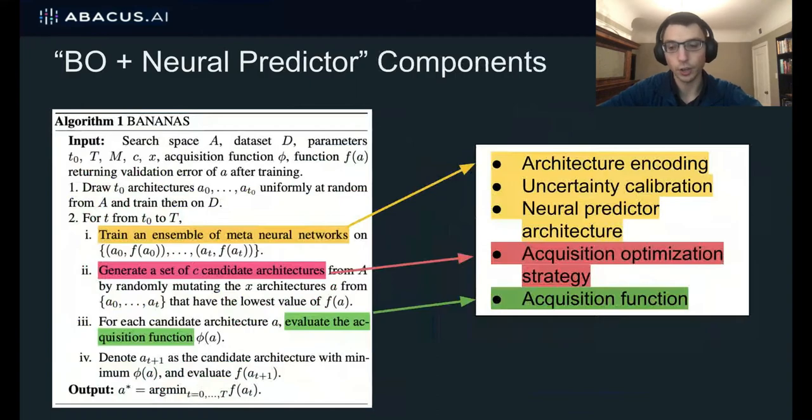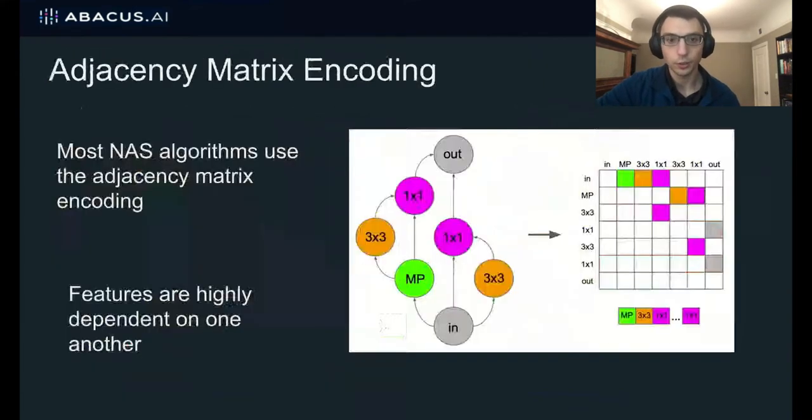So there are many choices we need to make when we set up an algorithm like this. We need to choose an acquisition function, an optimization strategy, and also how to encode the architectures, how to calibrate the uncertainties, and what architecture to pick for the neural predictor. So in the next few slides, I'll be talking about all of these components and conducting analysis on each of these components. And I'll start with the architecture encodings.